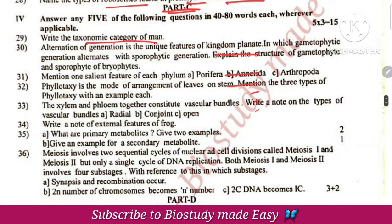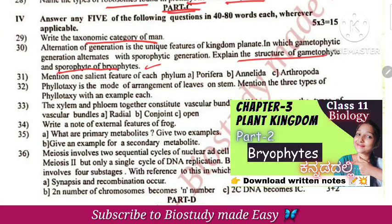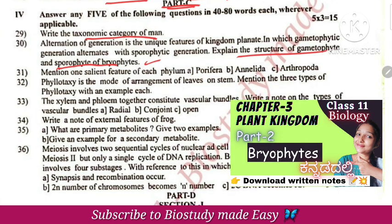Taxonomic category for man — I will tell you. Living world — that is a table from the classification notes. Explain the structure of gametophyte and sporophyte in bryophytes — I will explain this.